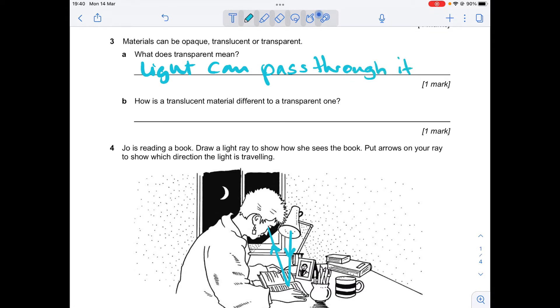How is a translucent material different to a transparent one? So the key word here was scattered. If you remember, light is scattered as it passes through the translucent material.